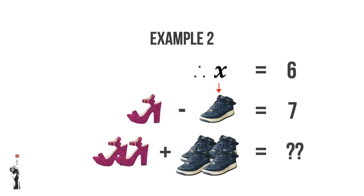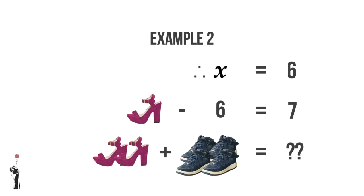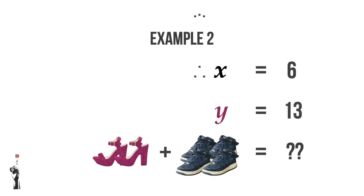Now that we know X is equal to 6, we can put it into the second line. We can see that this pink shoe minus 6 is equal to 7. Let's replace it with a variable Y. So Y minus 6 is equal to 7, which means Y must equal to 13.